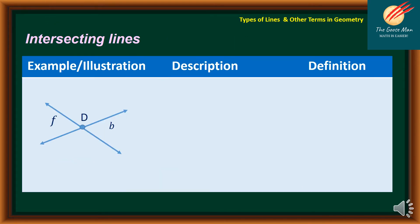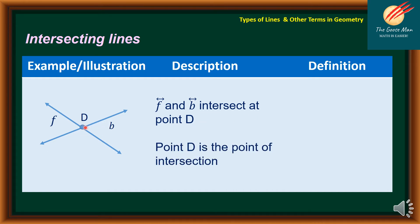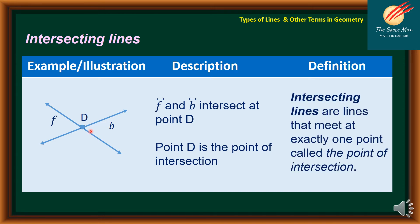The next definition of terms is intersecting lines. From the illustration on the left side, line F and line B intersect at point D. Point D is the point of intersection. Intersecting lines are lines that meet at exactly one point called the point of intersection.